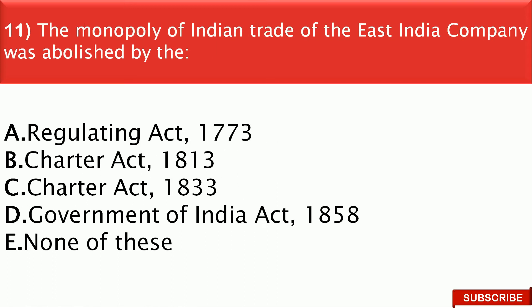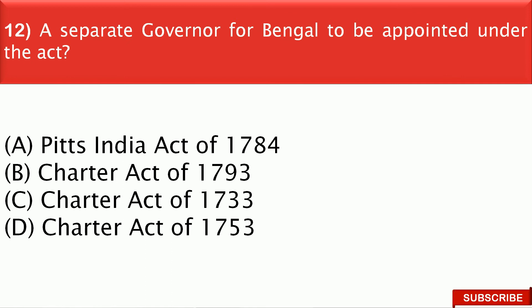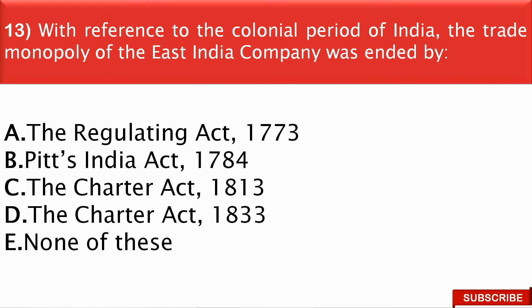Next question: The monopoly of Indian trade of the East India Company was abolished by the — the right answer is option B, that is the Charter Act 1813. Next question: A separate governor for Bengal was to be appointed under the act — the right answer is option D, that is the Charter Act of 1853. With reference to the colonial period of India, the trade monopoly of the East India Company was ended by — the right answer is option C, that is the Charter Act of 1813.